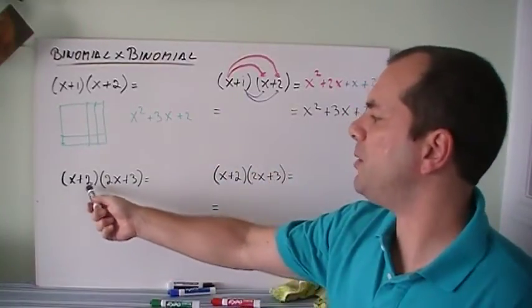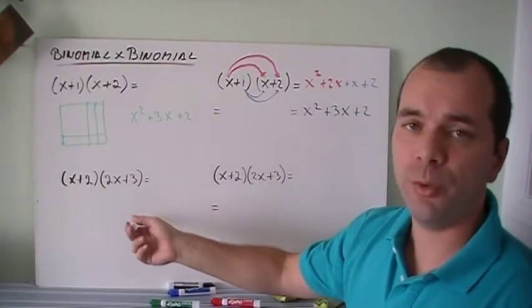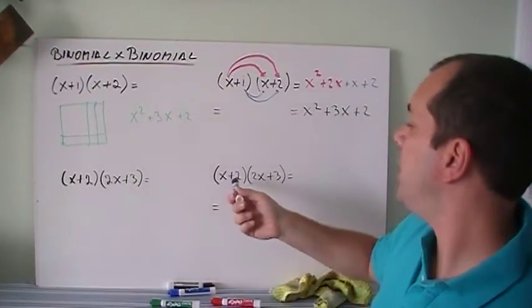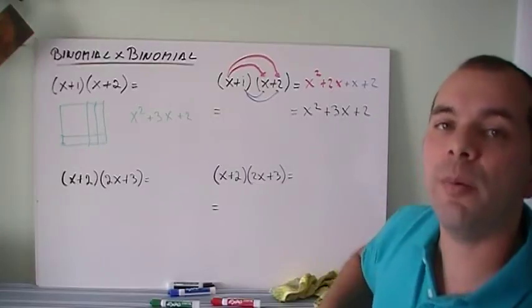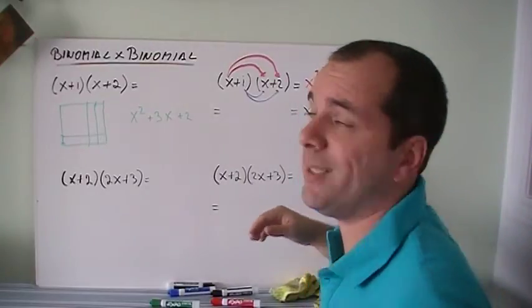Right? You can give this a try. x plus 2 and 2x plus 3. Do it on your own with the tiles. And then give that a try by doing the arrows on top and the arrows on the bottom. And you should end with exactly the same answer.